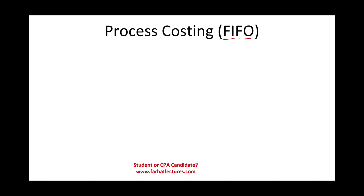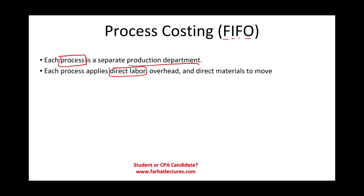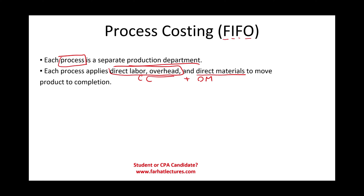Let's go back and review what process costing is. In process costing, each process is a separate production department, and for each process we apply direct labor, direct material, and overhead. For direct labor and overhead combined, we call this conversion cost. Once finished, we move it to the next process until the goods are produced.